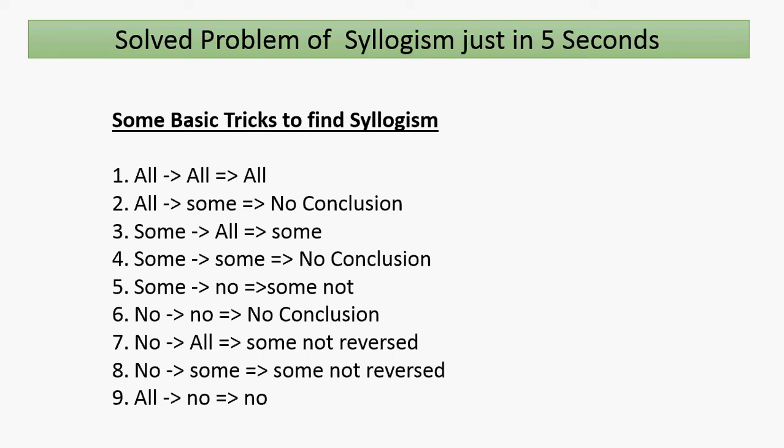...then the conclusion is 'all'. The second trick: if the first statement has 'all' and the second statement's first word is 'some', then there is no conclusion. The third trick: if the first statement has 'some' and the second statement's first word is 'all', then the conclusion is 'some'.